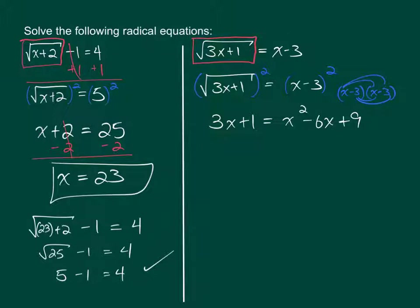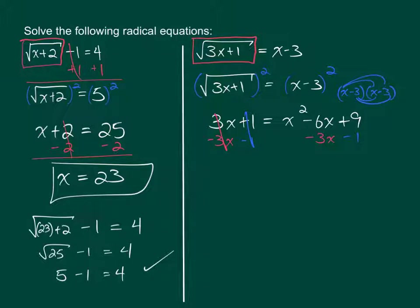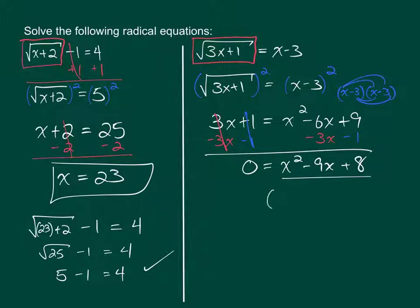Now we are in a quadratic situation. In order to solve this, we need to set it equal to zero. To keep the X squared positive, I'm going to move all the terms on the left over to the right side. The 3X will cancel with the minus 3X, and the 1 will cancel with the negative 1. We can then factor this into X minus 8 times X minus 1 equals 0. Setting each factor equal to 0 and solving for X, we get X equals 8 and X equals 1.